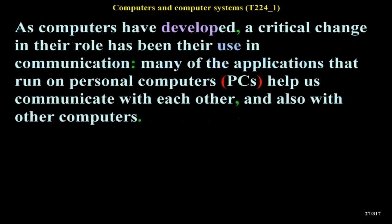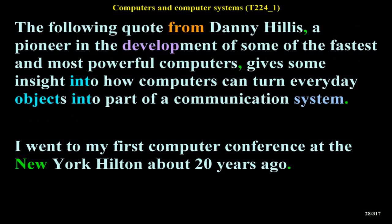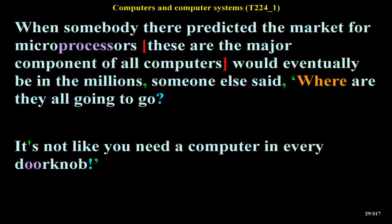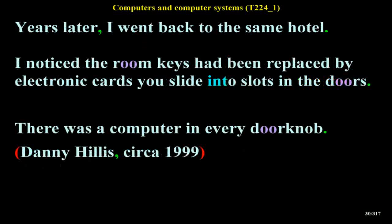As computers have developed, a critical change has been their use in communication. Many applications running on PCs help us communicate with each other and with other computers. Danny Hillis, a pioneer in developing some of the fastest computers, noted: 'I went to my first computer conference about 20 years ago. When somebody predicted the market for microprocessors would eventually be in the millions, someone said: where are they all going to go? It's not like you need a computer in every doorknob. Years later, I went back to the same hotel and noticed the room keys had been replaced by electronic cards you slide into slots in the doors — there was a computer in every doorknob.' (Danny Hillis, circa 1999)